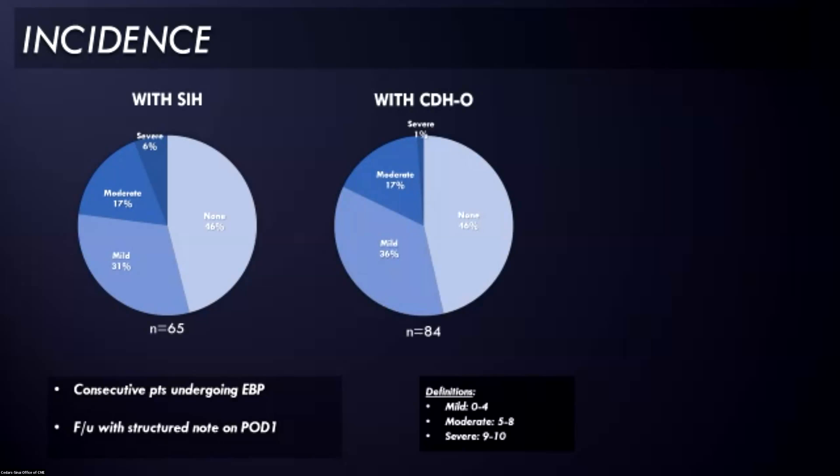We also looked at patients without a verifiable CSF leak. For lack of a better term, I call these CDHO, which is chronic daily headache with orthostatic features. We're not really sure what their ultimate diagnosis is, but we know that we haven't been able to confirm a CSF leak either by brain imaging or spine imaging. The proportions were about the same. In 84 patients who we followed up who had an empiric epidural blood patch, they developed rebound intracranial hypertension in about the same proportions and with about the same number of people having moderate or greater severity.